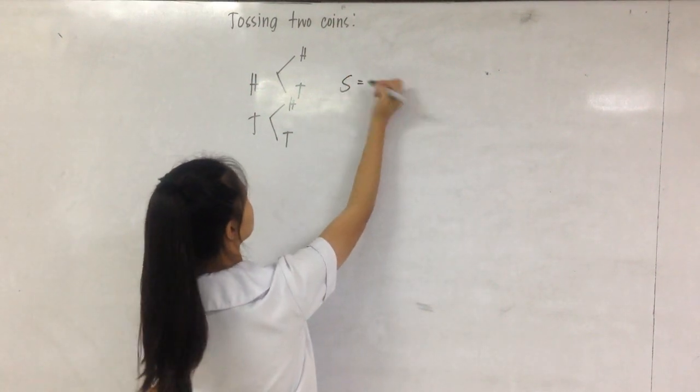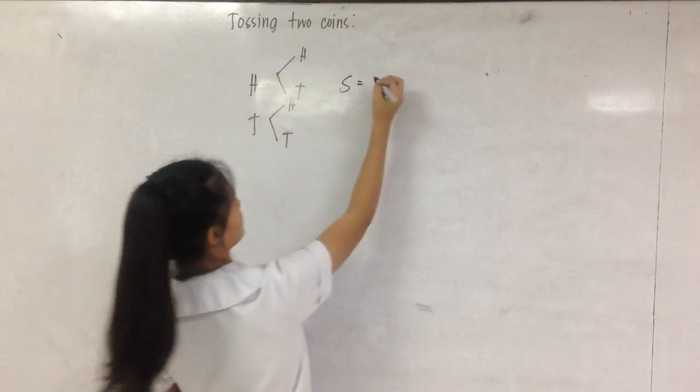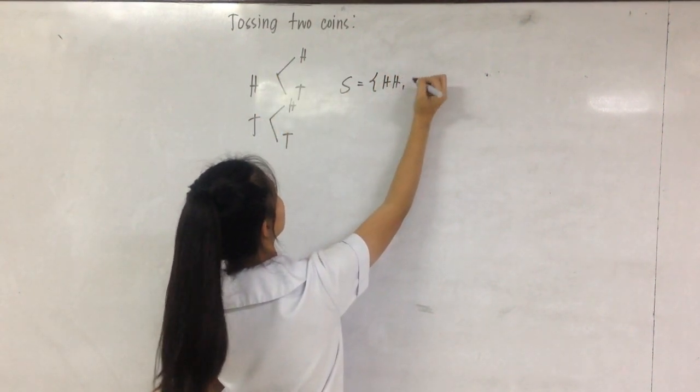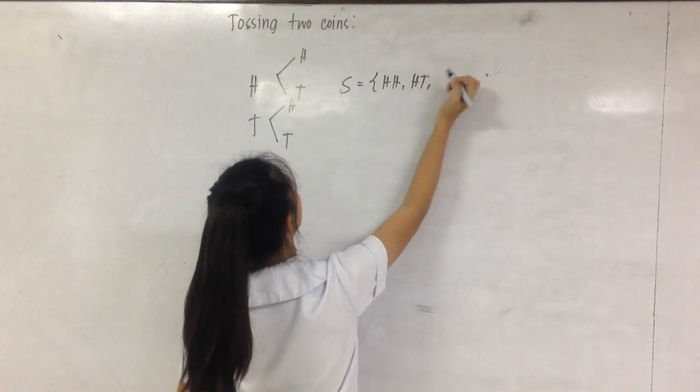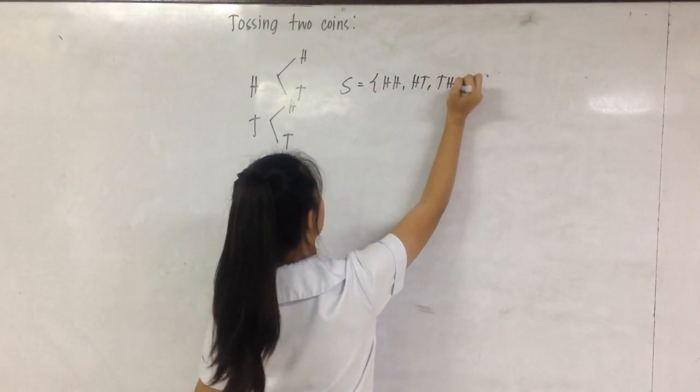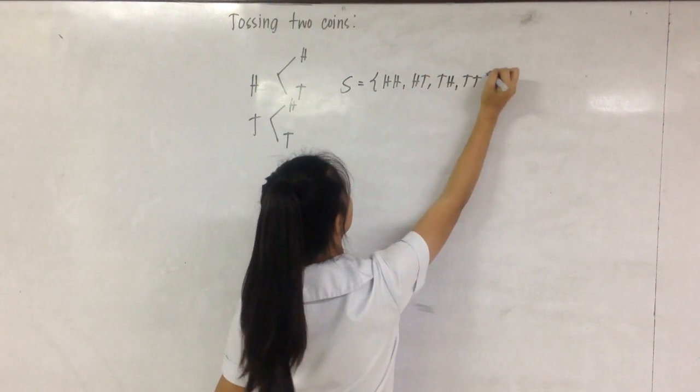So our sample space can be H-H, H-T, T-H, and T-T. This is the sample space.